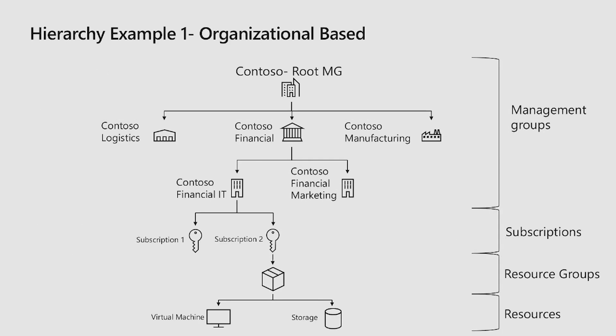Let's look at an example of what you can do with Management Groups. This is an organizational-based structure that mirrors your organizational resource structure. At the top we have Contoso, which is the Root Management Group. Every Management Group hierarchy always has this root level — it's the top level that is automatically given to every hierarchy. Underneath of it, you can structure your environment based on your different departments, subsidiaries, or other pieces within your organization.